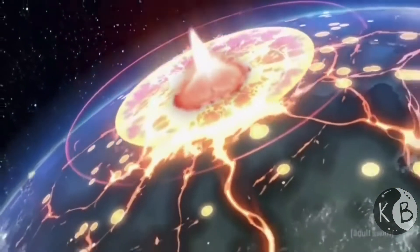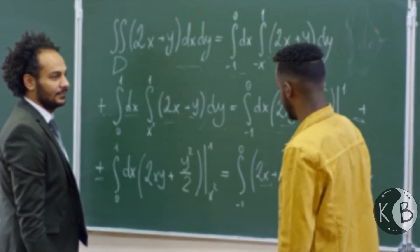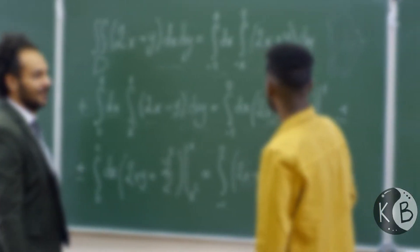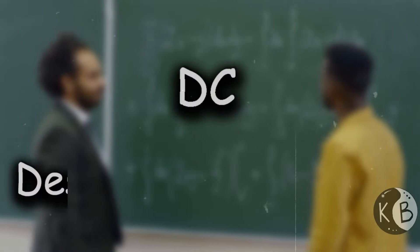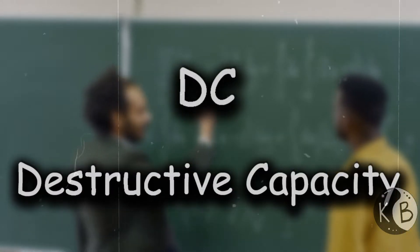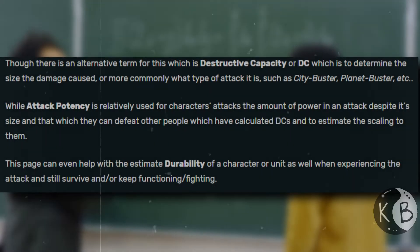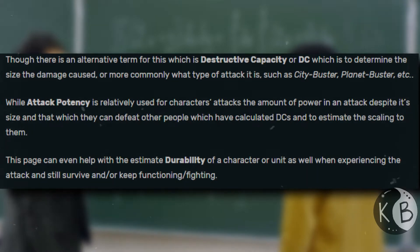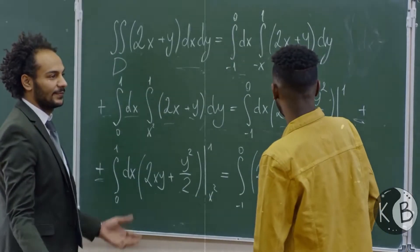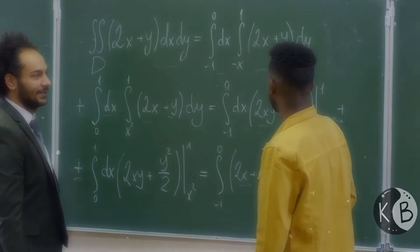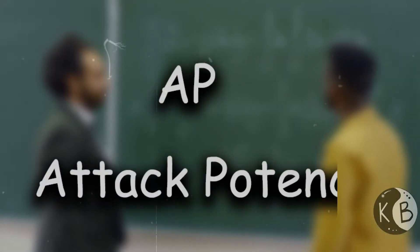There are two ways to scale the strength of a character. The first is DC — destructive capacity. This is the one most people know; it's basically what a character can destroy. For example, if someone can punch a planet and make it go kaboom, that character has planetary DC. It's whatever the attack can affect — the measured area of effect.